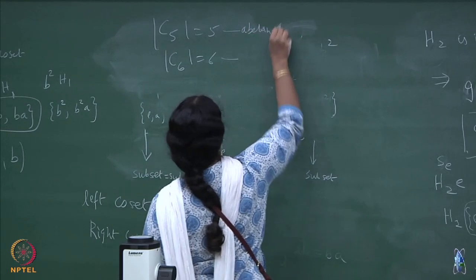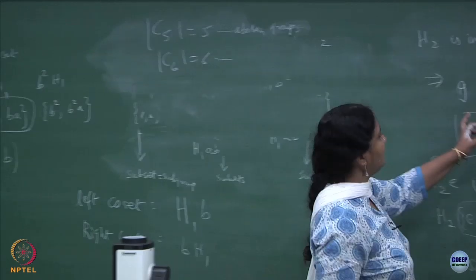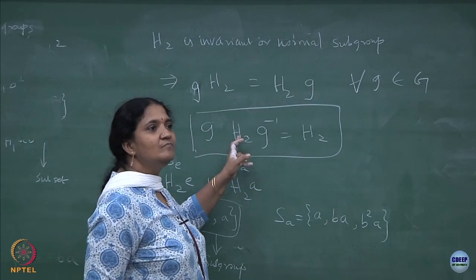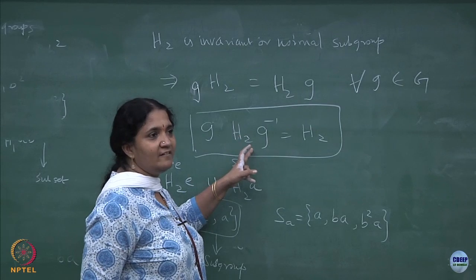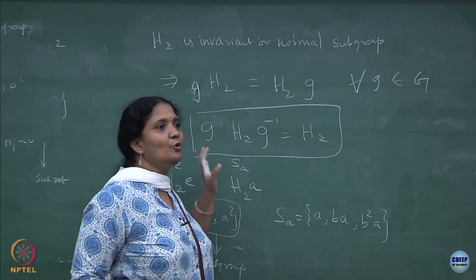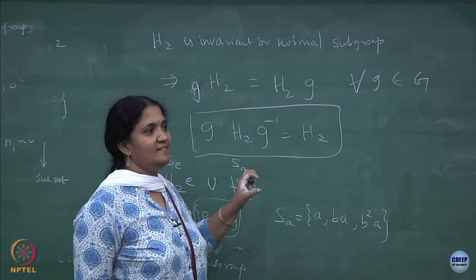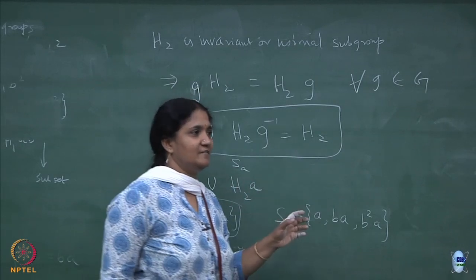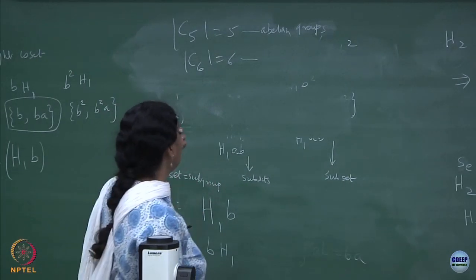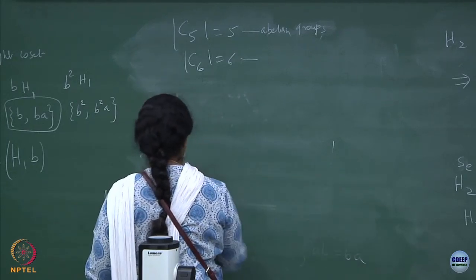If you have abelian groups, you do not have conjugate elements in the non-trivial sense. Abelian means elements commute trivially, so whether subgroups are invariant or not, everything will be self-conjugate. Even if you find subgroups in abelian groups, they will be self-conjugate and you will not get distinct conjugate elements. Do the simple exercise for C_6 — I will give an assignment on Thursday — and compare and contrast with what we did for the symmetric group.